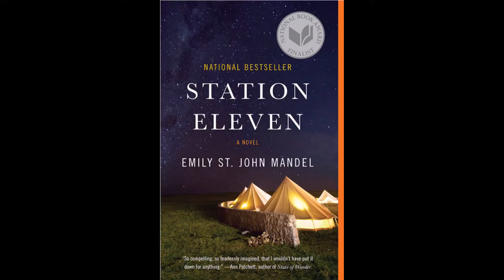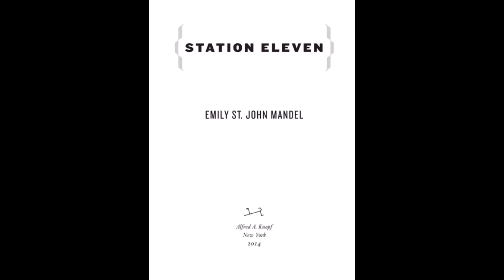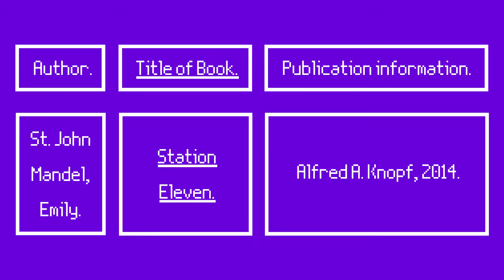You can find all the information you need for your citation by looking at the book's front cover and the title page. Looking at the front cover of Station Eleven, the author is Emily St. John Mandel. And when I look at the title page, I can see that the book was released by Alfred A. Knopf in 2014. Now I just need to fill in the blanks of my citation pattern with all of the information I pulled from my book.